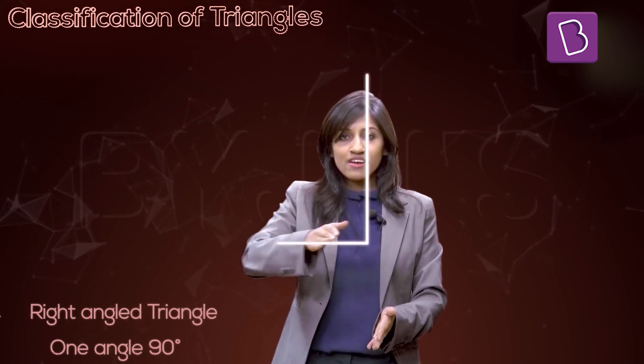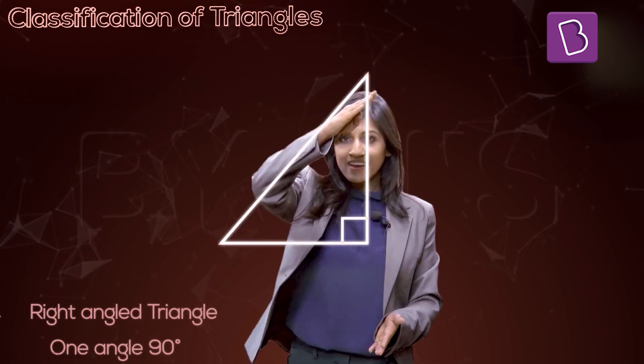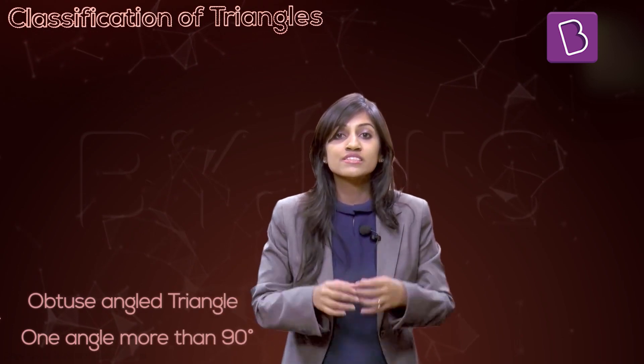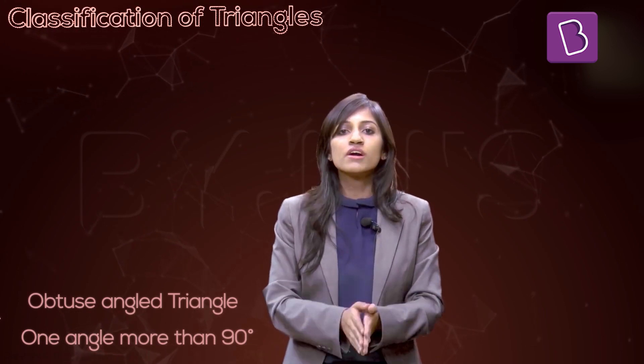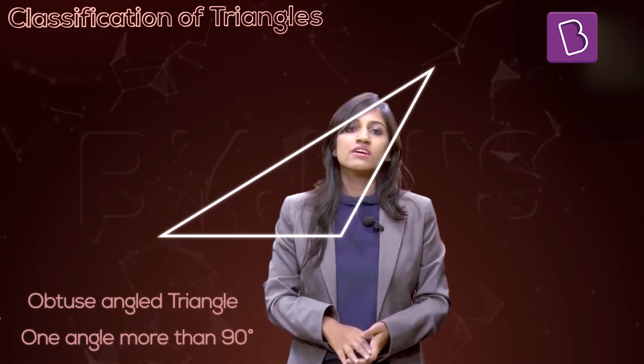The other type is a right angle triangle — a triangle where one special angle is exactly 90 degrees. Moving on, the third type: what have I missed? Yes — obtuse. An obtuse angle triangle is a triangle with one angle more than 90 degrees, something like this. So those are the three types of triangles based on angles.